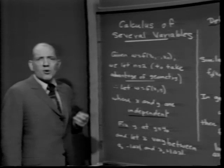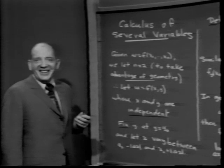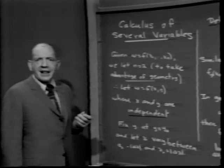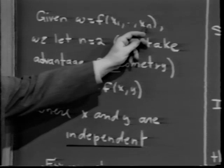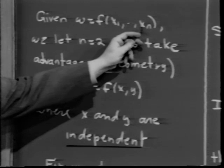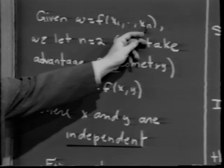The w here indicates that the output is a real number. In the same way that y equals f of x indicated a graph — which let us visualize things pictorially that might have been harder to understand analytically — even though n may be any positive integer greater than 1, a function of several variables is defined as this type of expression where n is greater than 1.